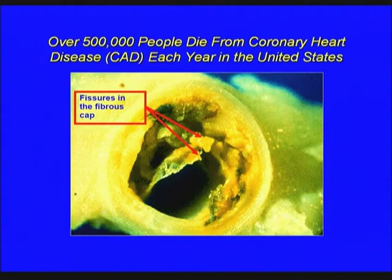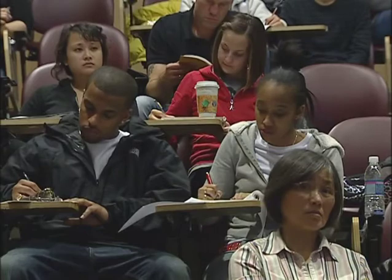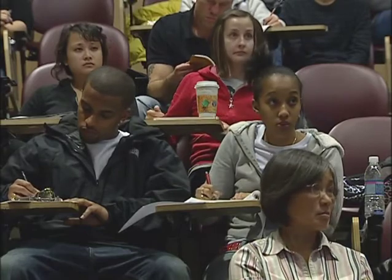This is what kills most people in the United States. About 40 to 50 percent of people in the United States die from coronary artery disease, and the underlying problem is accumulation of cholesterol in the arteries that supply blood to your heart. This is an atherosclerotic lesion — very lipid-rich, rich in cholesterol — that has ruptured and triggered the formation of a clot in the artery, killing the patient. This is what causes a myocardial infarction, or a heart attack.